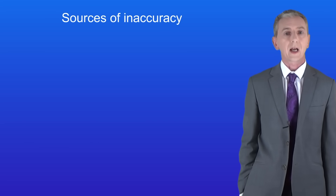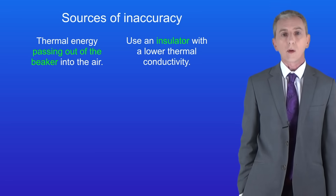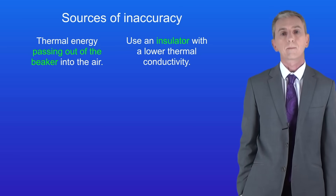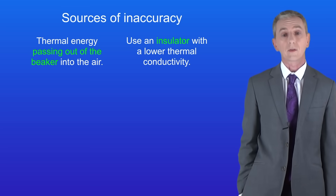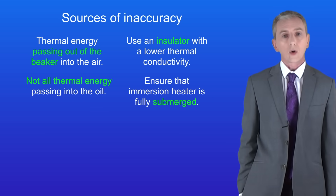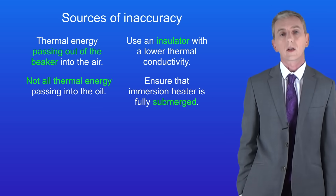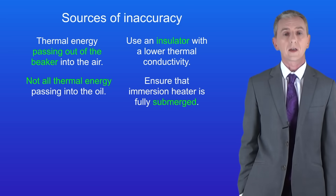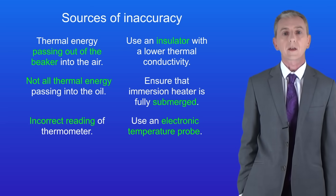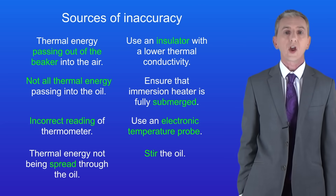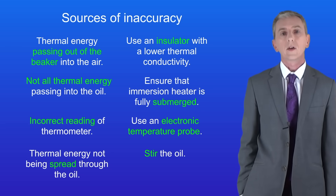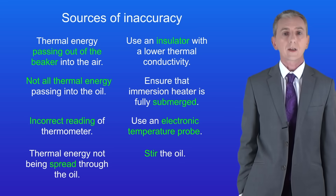The specific heat capacity we've calculated may not be fully accurate. The first problem is thermal energy passing out of the beaker and into the air — we can reduce this by using an insulator with a lower thermal conductivity. Secondly, not all of the thermal energy from the immersion heater passes into the oil, and we can overcome that by ensuring the immersion heater is fully submerged. Incorrectly reading the thermometer is another issue, which we can prevent by using an electronic temperature probe. Finally, thermal energy may not be spread through the oil, so we can stir the oil to reduce that error.